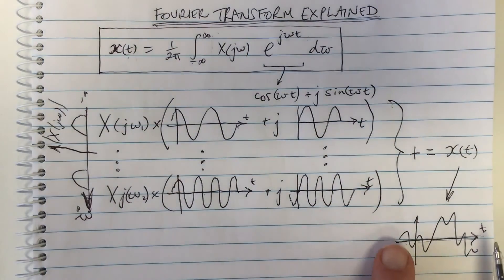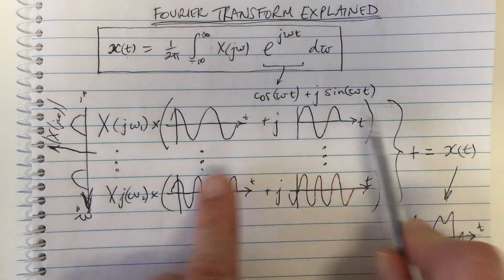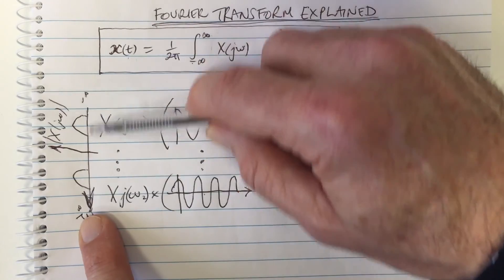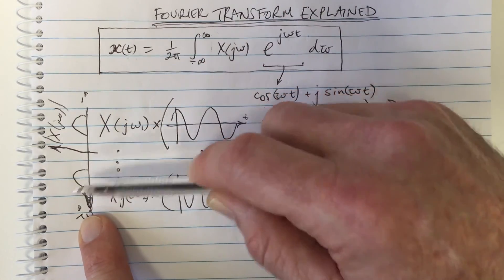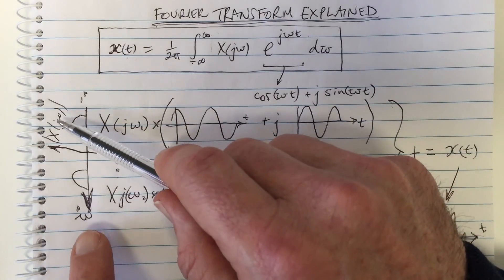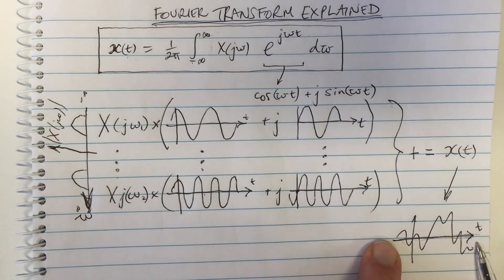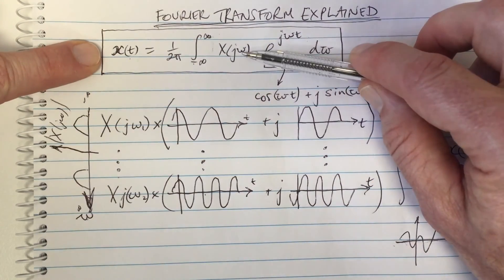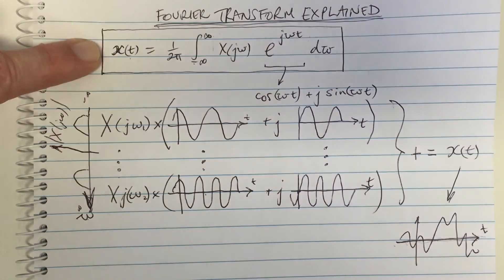You can have a signal in one dimension, or you can transform it into an equivalent representation in another dimension. It can be written in terms of frequency or in terms of time — it's the same function, just a different representation. That's why we call it a transform.